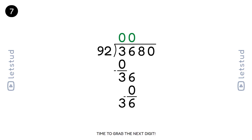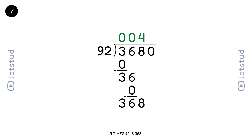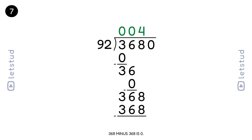Time to grab the next digit. We have a remainder of 36 and bring down the 8 to make 368. 92 fits into 368 four times. 4 times 92 is 368. 368 minus 368 is 0.